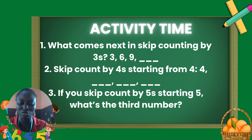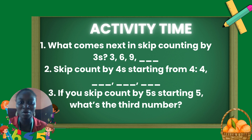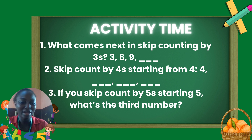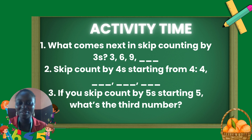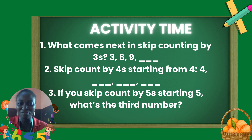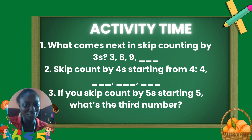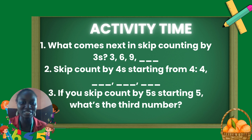The third question: if you skip count by five, starting from five, what is the third number? Can you guess? Okay, let's do it together. We have five plus five, which is ten. So, we have five, ten. Ten plus five is fifteen. So, the third number is fifteen.